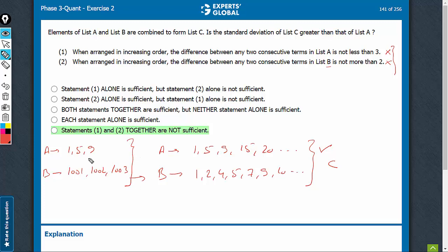And now, put the two lists together, you will see that the average will be something around 500, and the terms are so far away that the standard deviation is going to be a lot, lot more than the standard deviation for A alone, and therefore, even on combining, we cannot be sure.